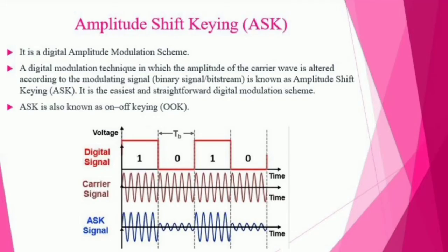In this video you will learn what is Amplitude Shift Keying (ASK) and how to write a MATLAB program to verify its operation. There are two types of amplitude modulation schemes: digital and analog. ASK is a digital amplitude modulation technique in which the amplitude of the carrier wave is altered according to the modulating signal, which is a binary signal.